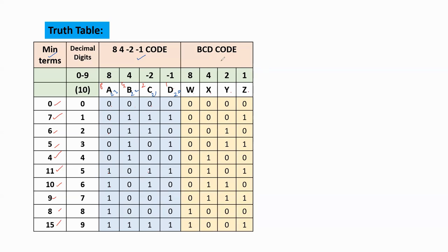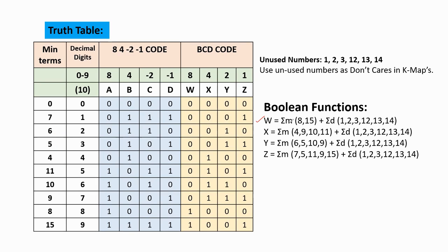Now we write the boolean functions in SOP form for output variables W, X, Y, Z. For W, the SOP form has minimum numbers where we consider equivalent minimum values for the 1s. In these two positions we have 1s, so the corresponding minimum numbers are 8 and 15. Therefore, W = sigma M(8, 15) plus sigma D (don't care values), because we have unused numbers in the range 0 to 15.